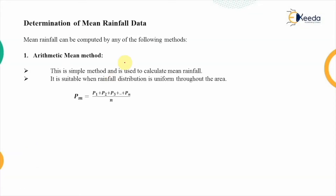In an area when rainfall is occurring, we need to calculate the mean rainfall so that we can estimate the trend in that particular area, because the rainfall intensity will be varying in a region. To evaluate that mean rainfall, we have different methods. The first method we are going to discuss is known as the arithmetic mean method, which is a simple average method used to calculate the mean rainfall.